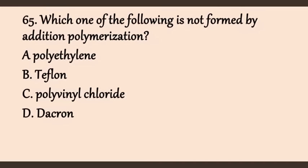Question 65: Which of the following is not formed by addition polymerization? Addition polymerization forms a polymer without eliminating smaller parts of the monomer. Options: A) polyethylene, B) Teflon, C) polyvinyl chloride (PVC), D) Dacron. Dacron is a condensation polymer, not an addition polymer. The answer is D.